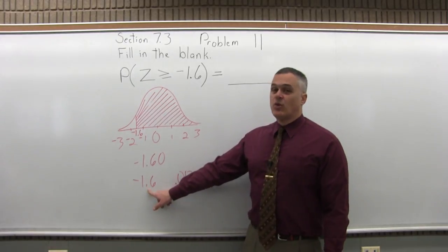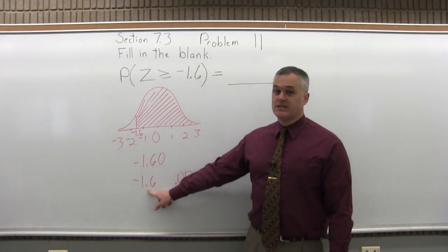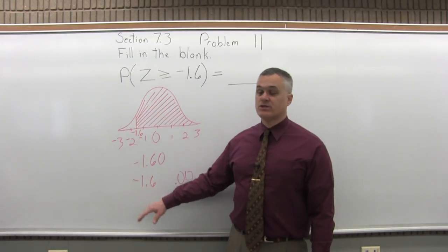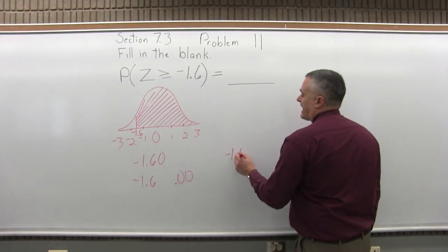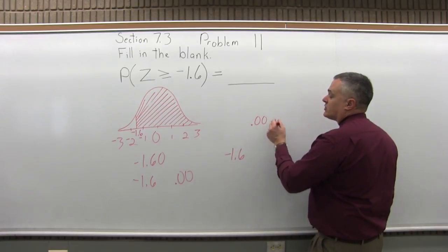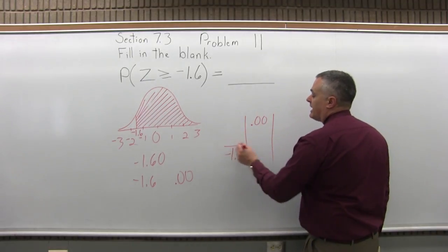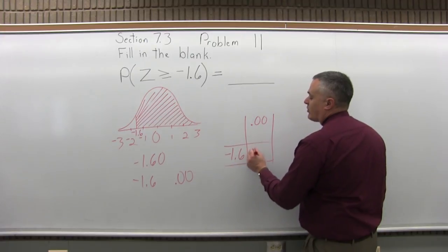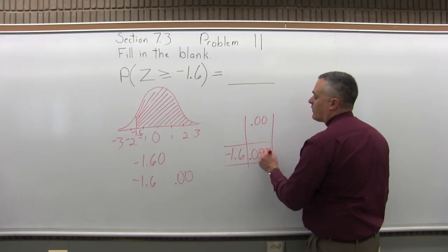I go to the negative 1.6 row. That's about halfway down the negative portion of the chart. And I intersect that with the zero zero column, which is the very first or leftmost column. And I find that they intersect at point zero five four nine.